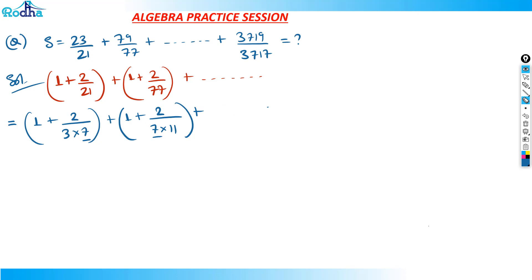You can now see the last term. The last term is 3719/3717, which is 1 + 2/3717. Once you write 1 + 2/3717, you're trying to break 3717 into two parts having a difference of 4.